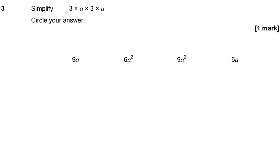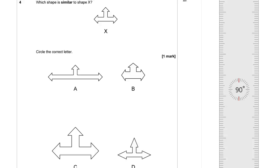Question 3: Simplify 3 times a times 3 times a. What we want to do is multiply like things with like things. So if I take that 3 and multiply it by that 3, I get 9. And if I take my a and multiply it by my a, I get a squared. So I end up with 9a squared.